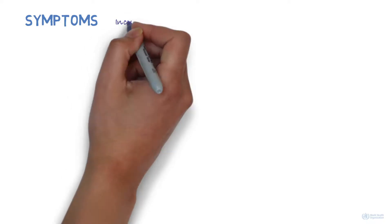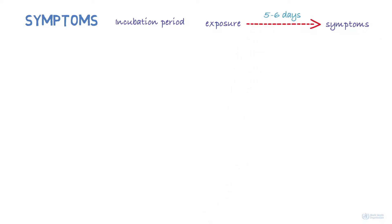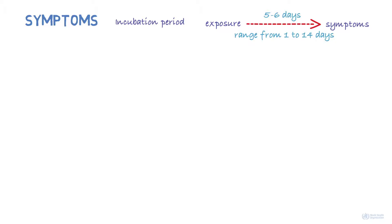What are the symptoms? The incubation period, which is the time taken from exposure to the virus and development of symptoms, is on average 5 to 6 days, but can range from 1 to 14 days. There can be a range of symptoms, from very mild to severe. Some people may not develop symptoms.